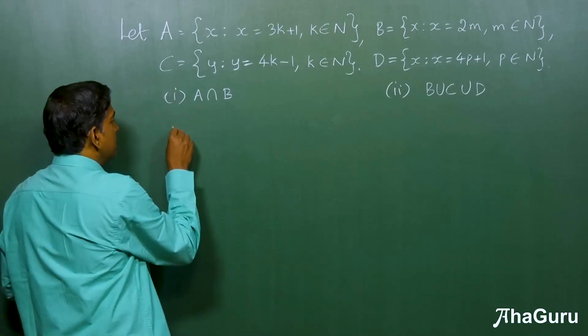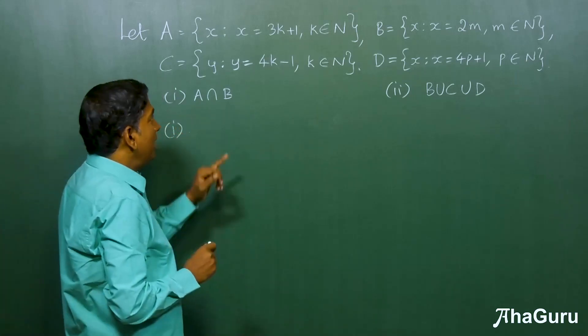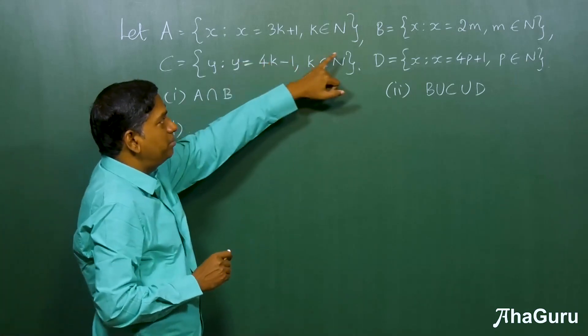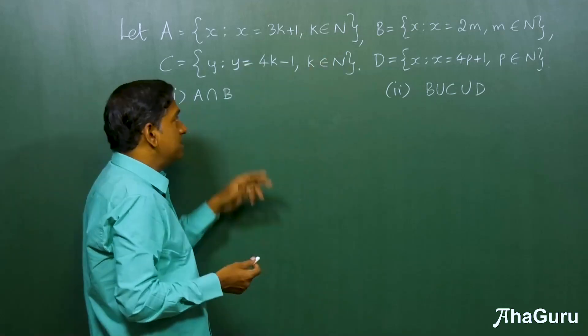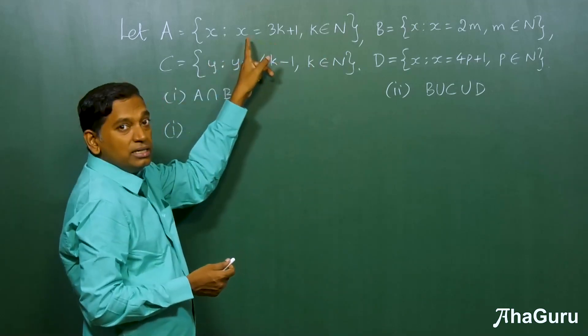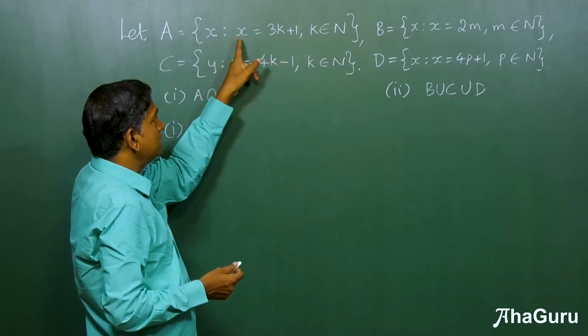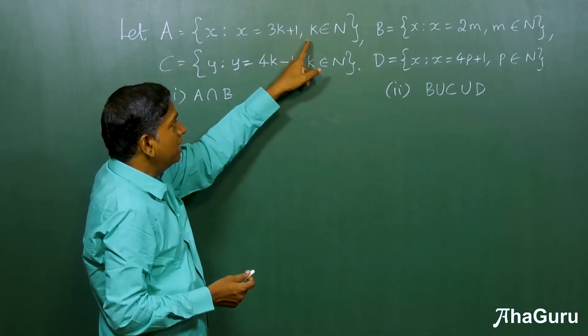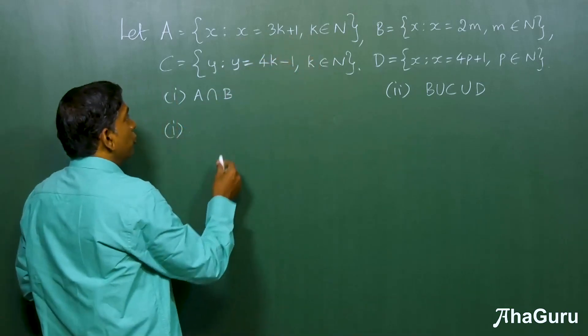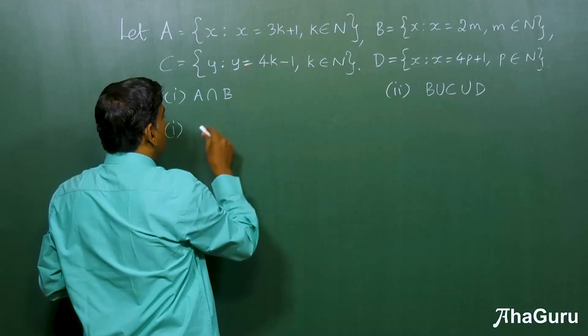So first, let's look at A intersection B. First, to understand what set A and set B actually represent, we have to look at the description. So this is x such that x is 3k plus 1, k belongs to natural numbers. So if you use that and substitute values for k,